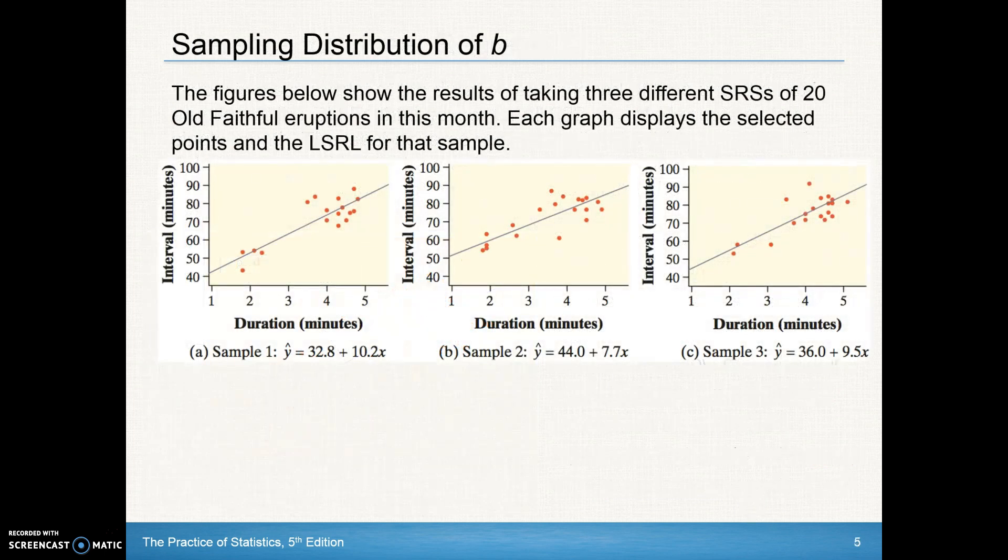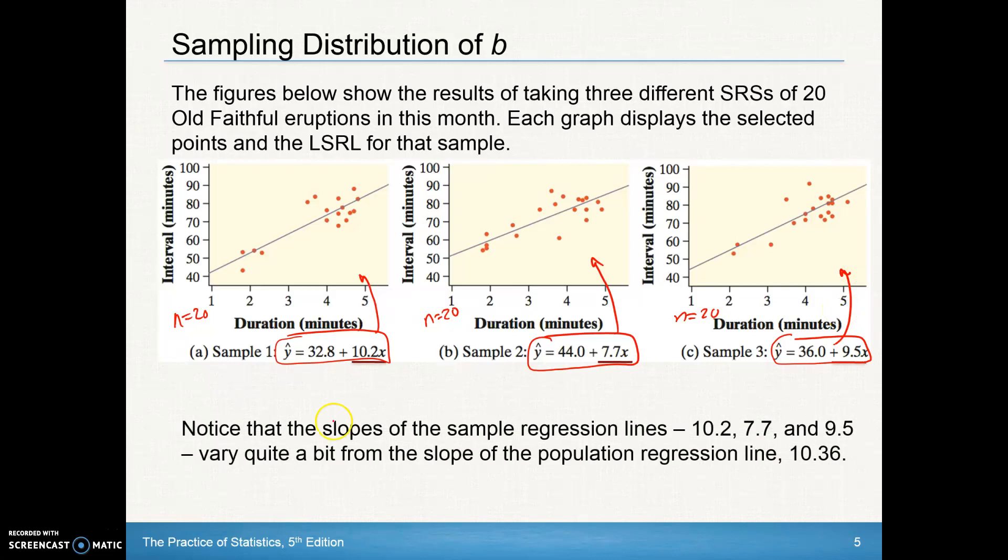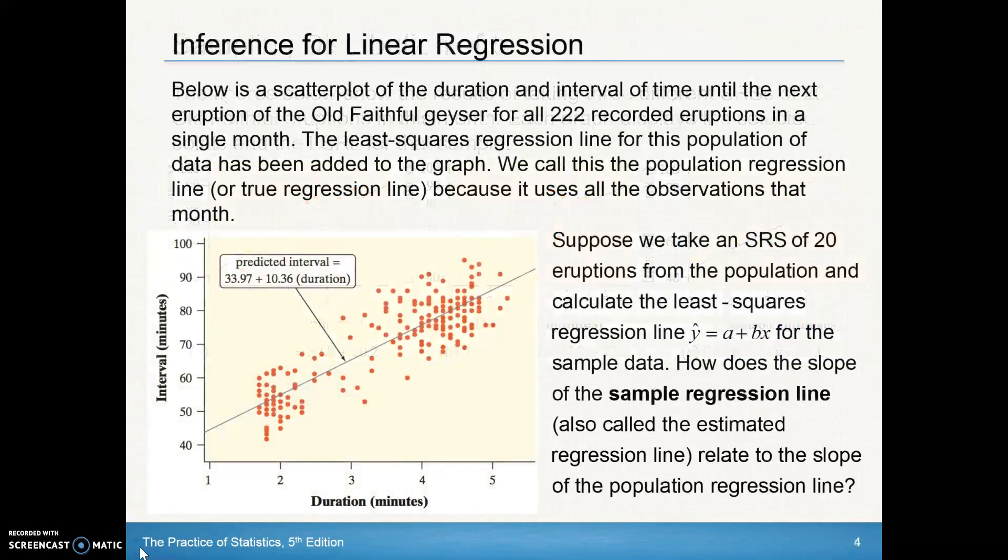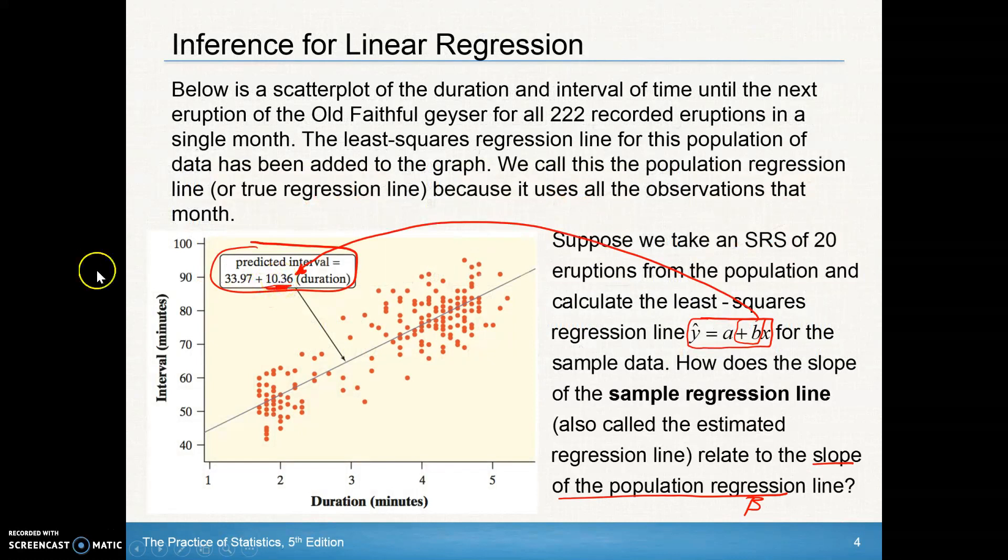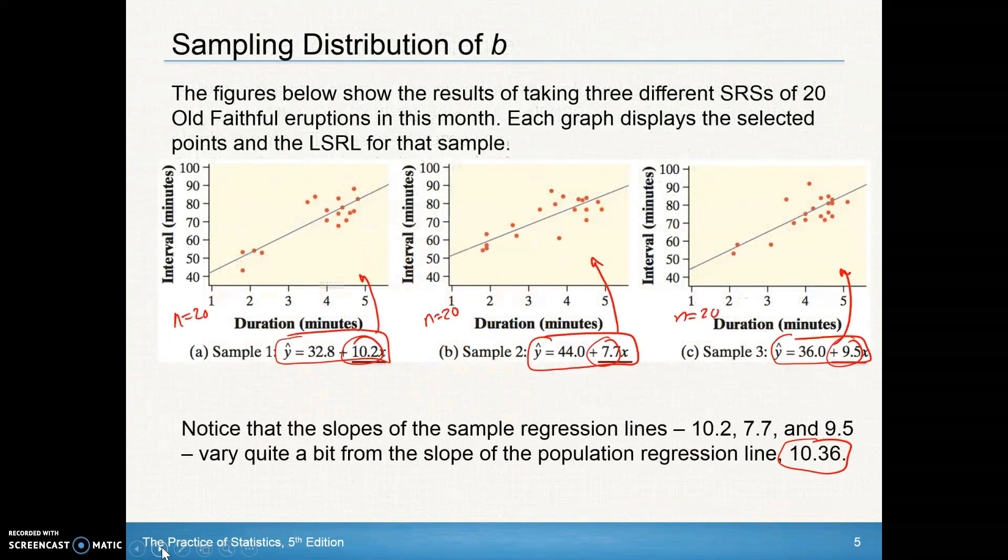The figures below show the results of taking three different SRSs of 20 old faithful eruptions in this month. Each graph displays the selected points and the least squared regression line for that sample. So we took a sample of 20 from that population of 222, and we've got our regression line for this one, et cetera. What we notice is that the slopes of these sample regression lines, here it's 10.2, here it's 7.7, here it's 9.5, they vary quite a bit from our population regression line of 10.36. They vary quite a bit from that, which we would expect in samples.